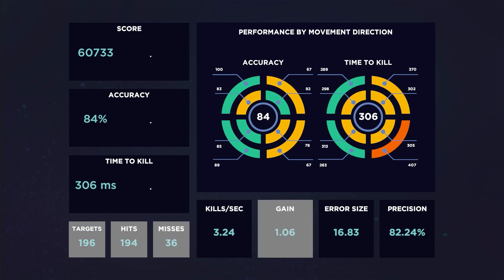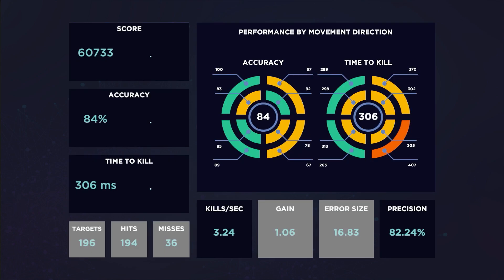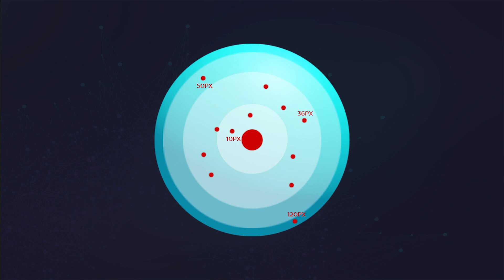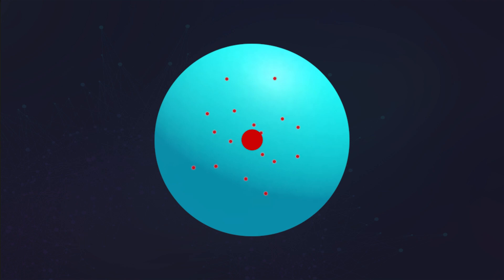Yield gain shows how much you're overshooting or undershooting on a target. If the number is above one, this means you're overshooting, and below one means you're undershooting. Error size is the relative error size in pixels from the center of the target. And finally, we have precision, which is how close relative to the center of the target each of your shots landed.